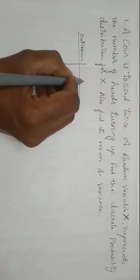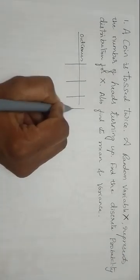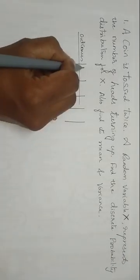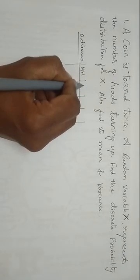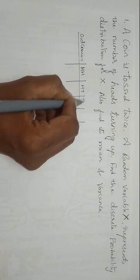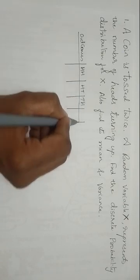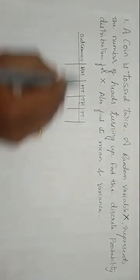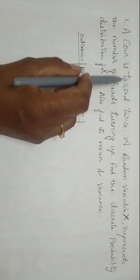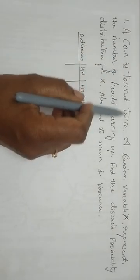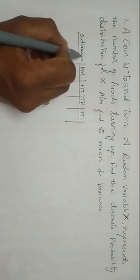Outcomes. What are the possible outcomes? HH, HT, TH and TT. Why we have taken like this? They are telling the coin is tossed twice. So HH.